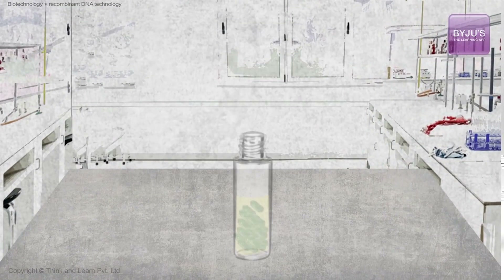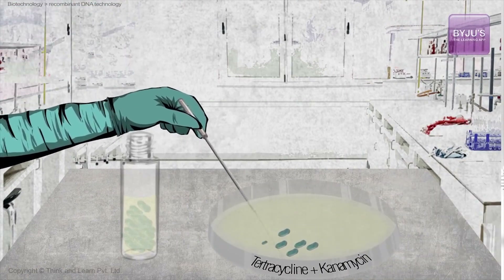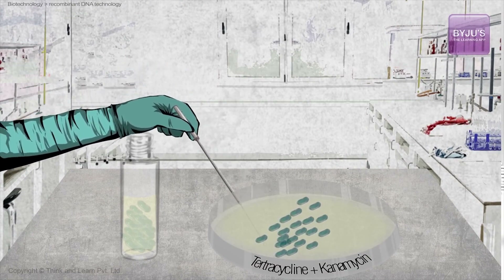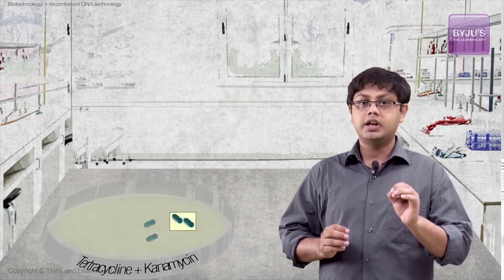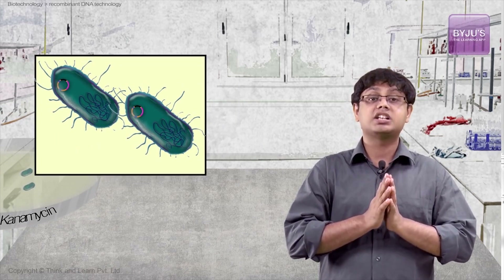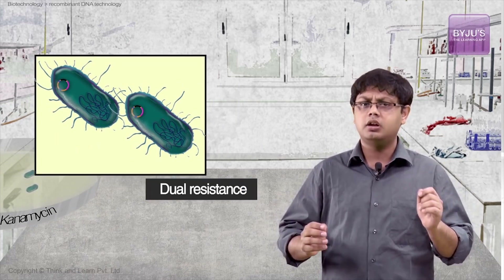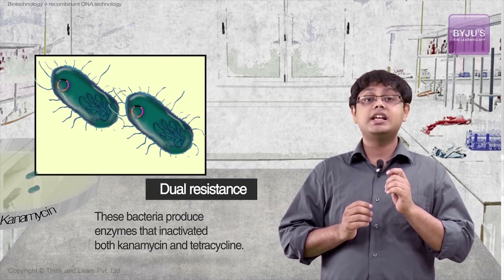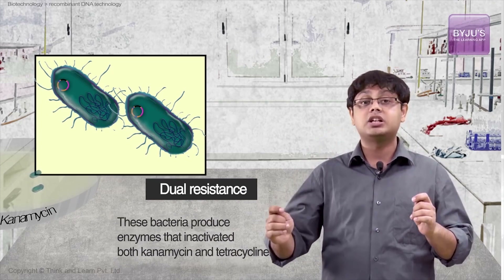Finally, the crunch came when the bacterial solution was spread over nutrient plates containing tetracycline as well as canamycin. As expected, most of the bacteria died, but a few survived. They were bound to contain the artificially created plasmid, conferring dual resistance to both antibiotics, because these bacteria were able to produce enzymes that inactivated both canamycin as well as tetracycline.